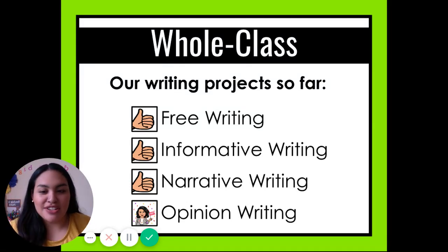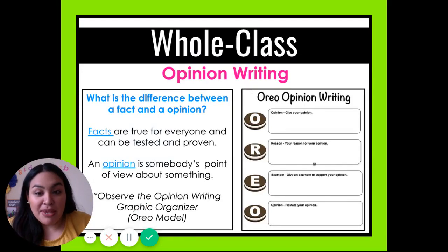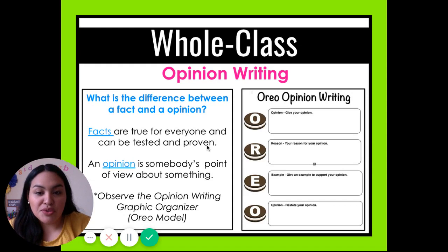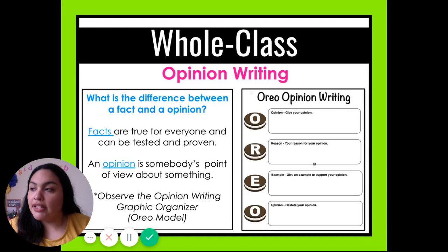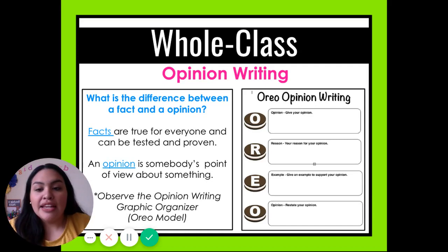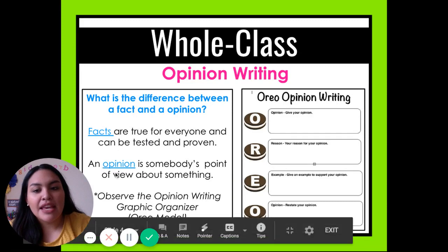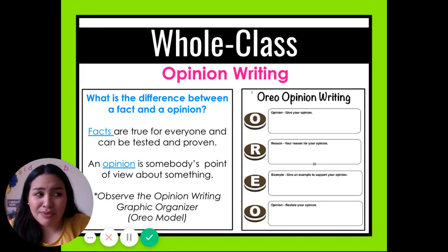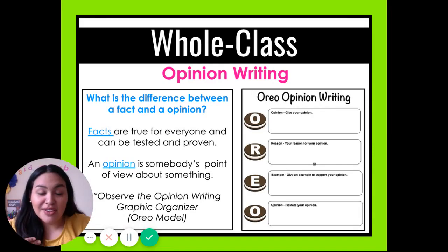So that's why I asked you those five questions. Opinion writing — what is the difference between a fact and an opinion? Facts are true for everyone and can be tested and proven. So if you say the sky is blue, everyone should be able to see it and it's true — that is a fact. An opinion is somebody's point of view about something. So if you say the best ice cream is vanilla ice cream, I'm going to say no — the best ice cream is mint chocolate chip. So we have different views, and that's okay. That's an opinion.